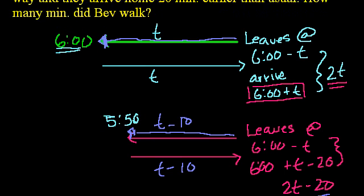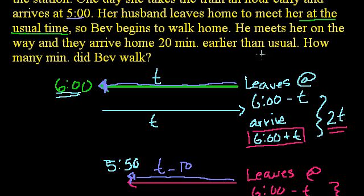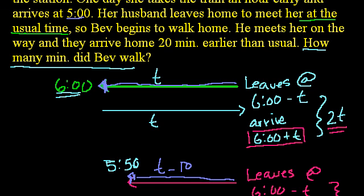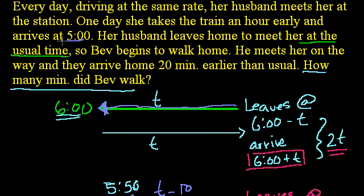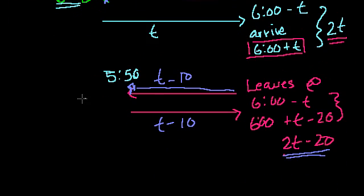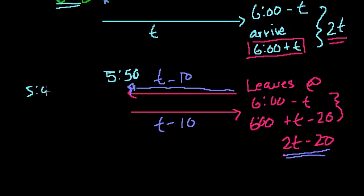Now the question is, how many minutes did Bev walk? Remember, she arrived an hour early and arrives at 5 o'clock. And then she starts walking. She arrives at 5 o'clock and just starts walking. And when does he pick her up? He picks her up at 5:50. So she walked for 50 minutes.